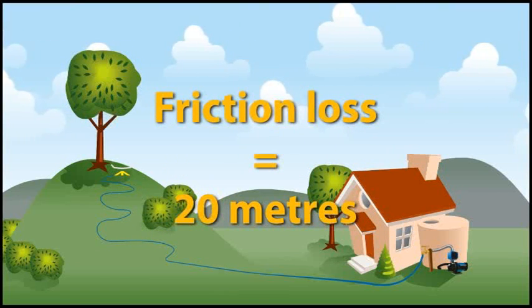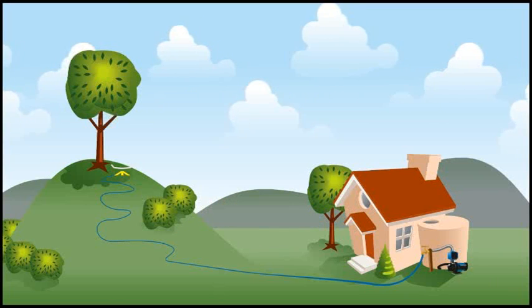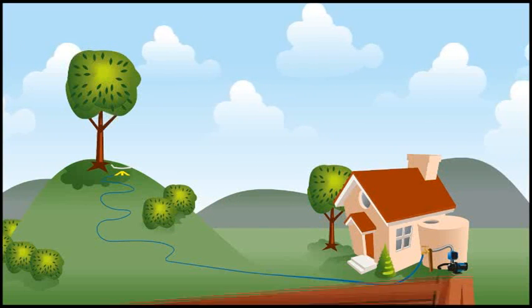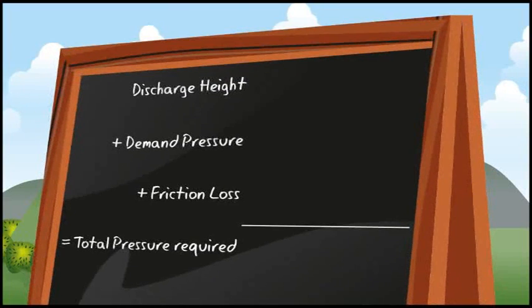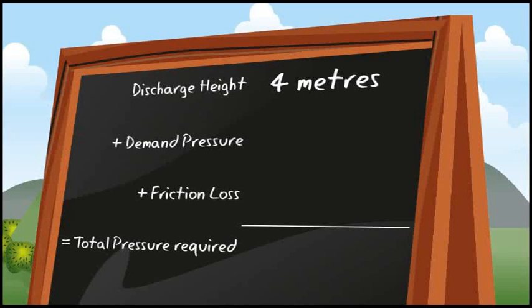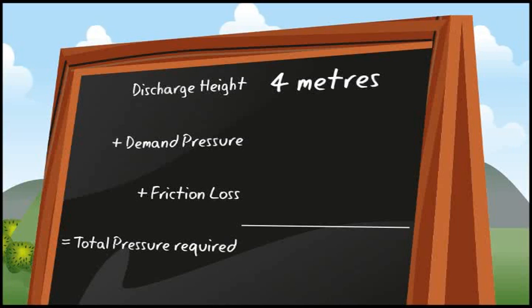The next step is to calculate the total head or pressure the pump will need to accommodate. We know that the discharge point is 4 metres above the pump, and the demand pressure of the sprinkler is 15 metres, or 150 kPa.